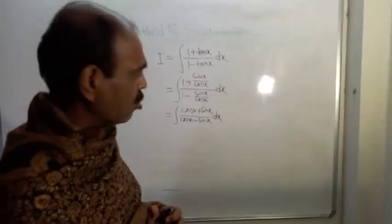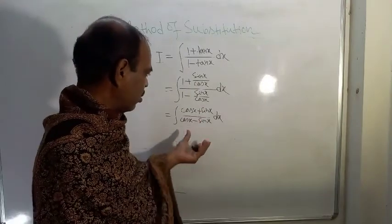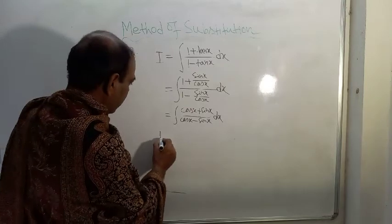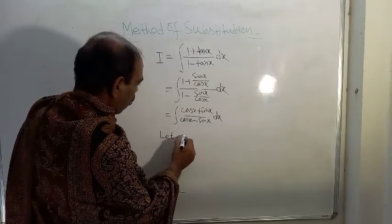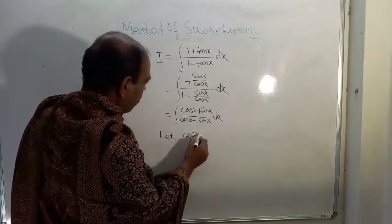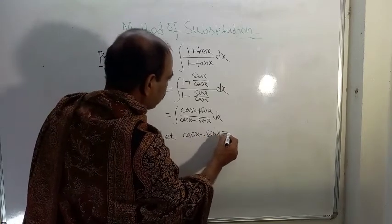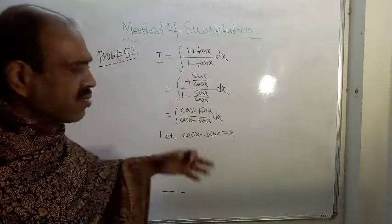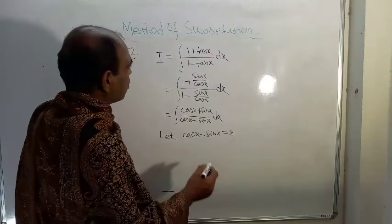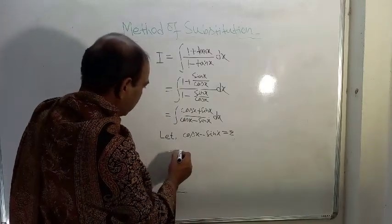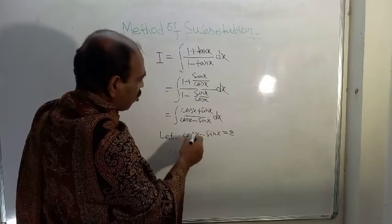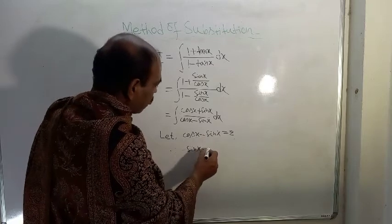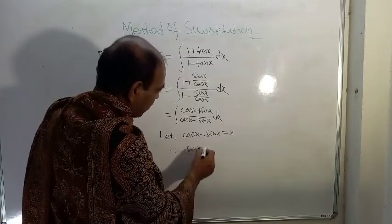Now assume: let cos x - sin x equal z. On differentiating both sides, the differentiation of cos x is -sin x, and the differentiation of -sin x is -cos x.